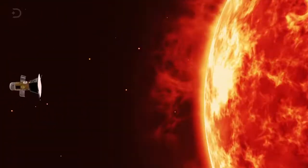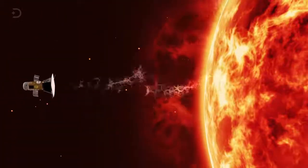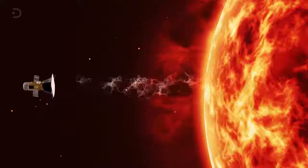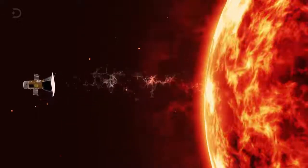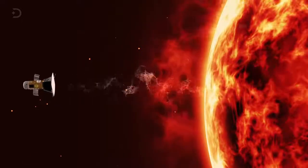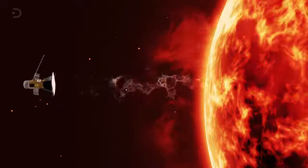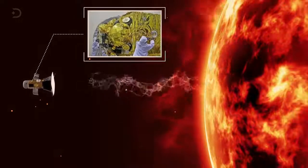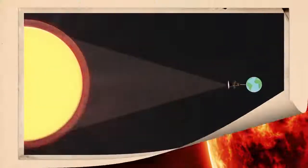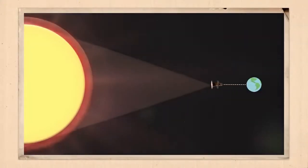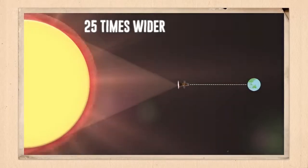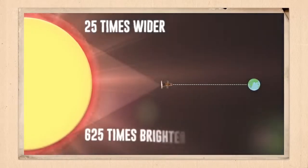The probe will have to withstand incredible amounts of heat and radiation, but it will zip towards the Sun to measure and gather data. The probe will also have to withstand being bombarded by tiny, fast-moving particles, some of which will hit the spacecraft. To fix this problem, the Parker probe is fitted with Kevlar blankets to protect itself from impacts. During the probe's close approach, the Sun will appear 25 times wider to the probe than when it left the Earth, and it will also be 625 times brighter.